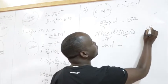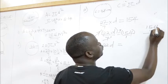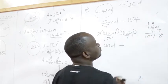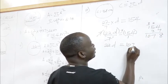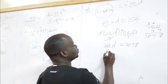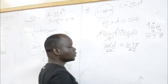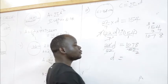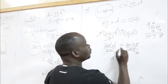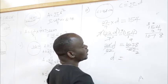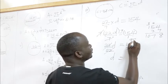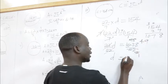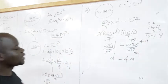Dividing both sides by 22 to find D: D = 1078 ÷ 22 = 49. So our diameter D = 49 centimeters. But remember, we want the area, so we are not finished yet.